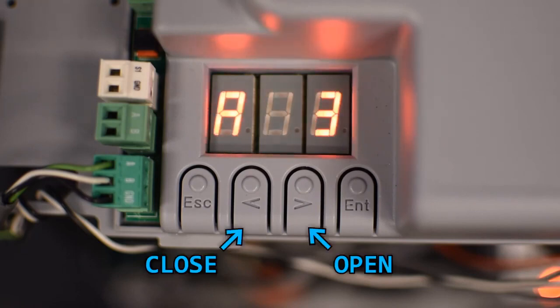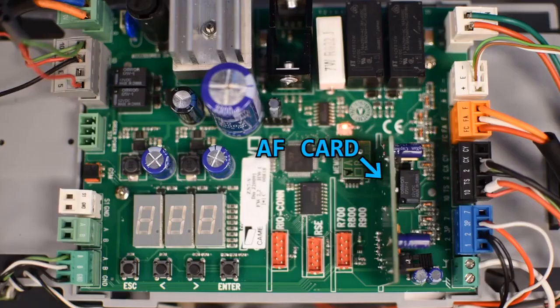Test everything by pressing the left arrow to close and the right arrow to open. Just make sure you're not in the menu system, indicated by the display being off. If you're going to program a remote control, make sure to install the AF card in the control board. Just remember to remove the power before installing the AF card.